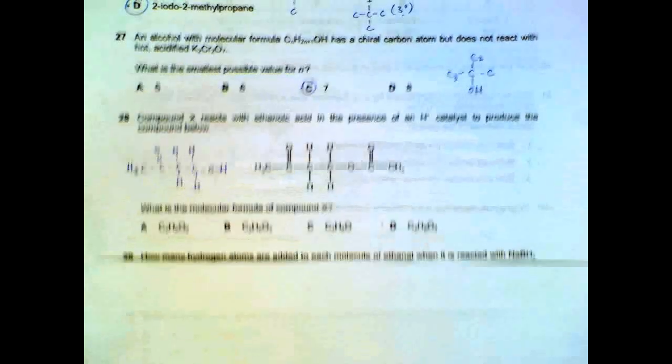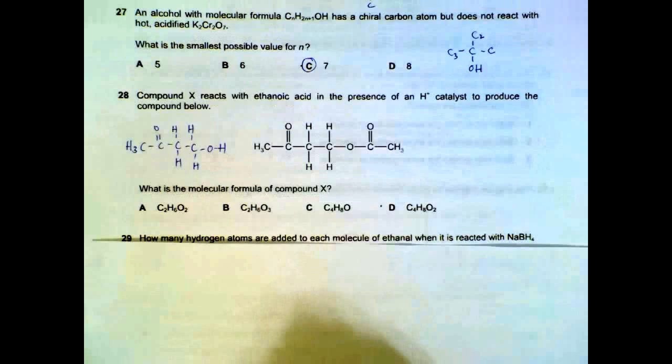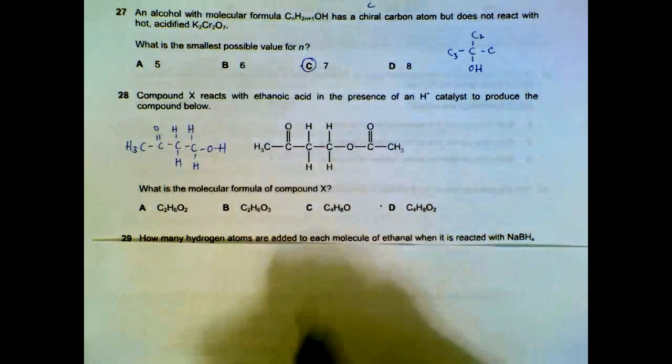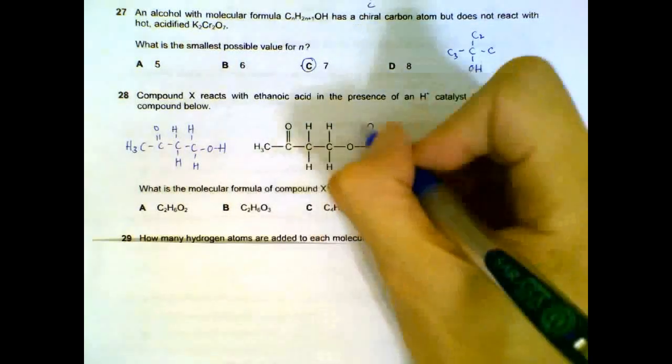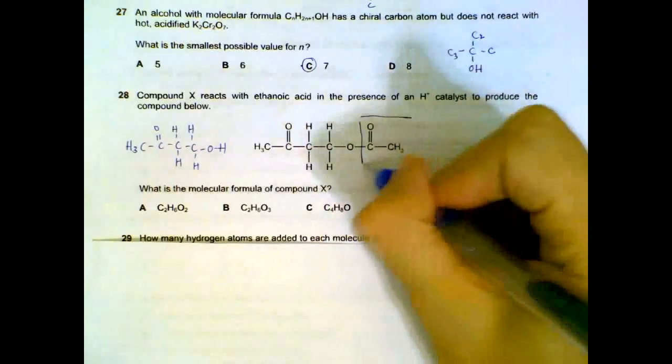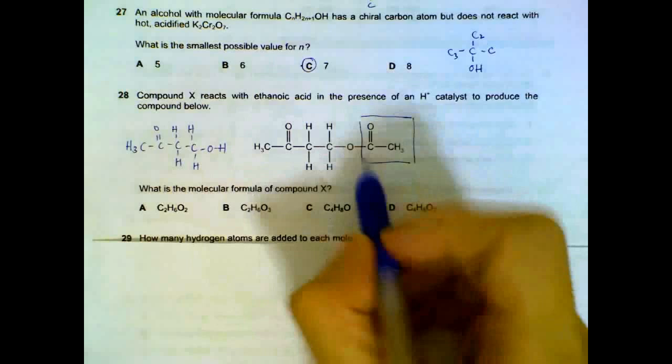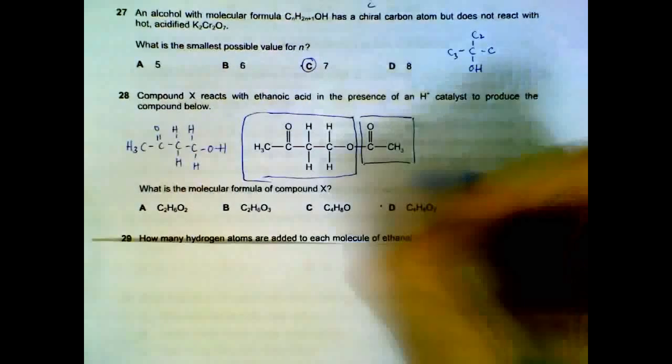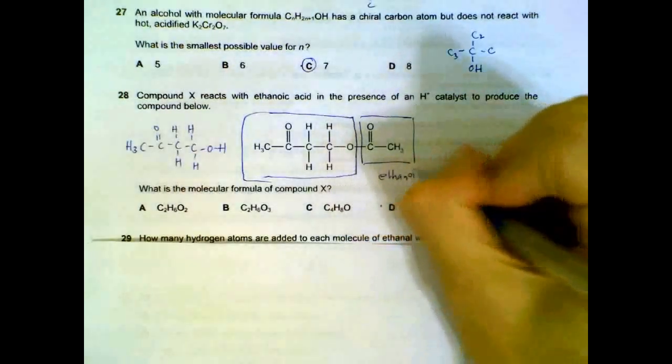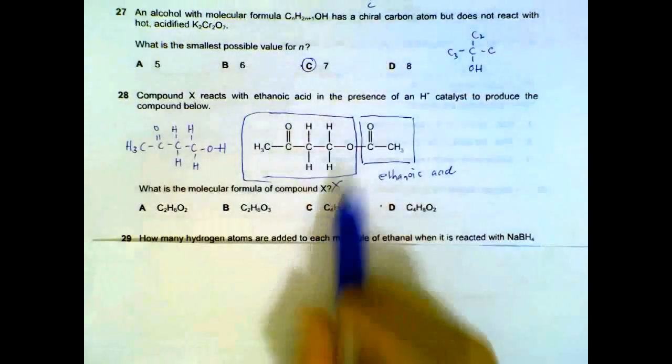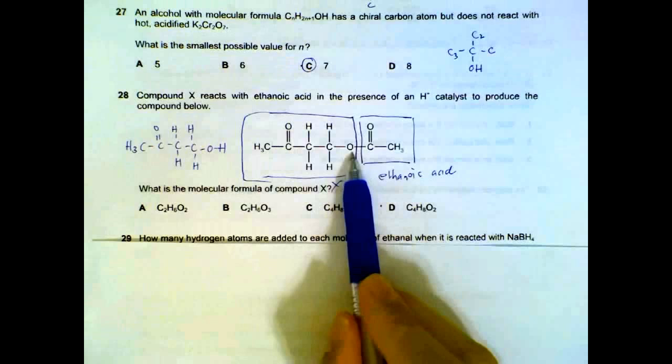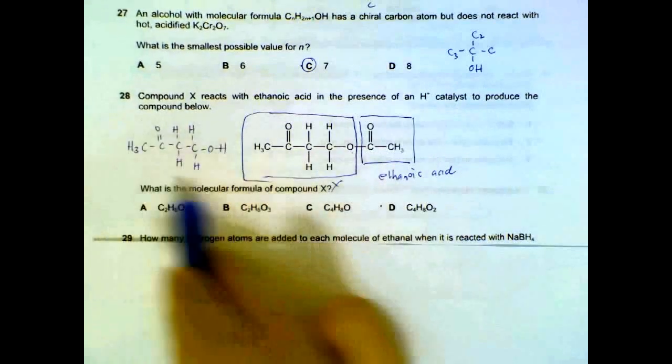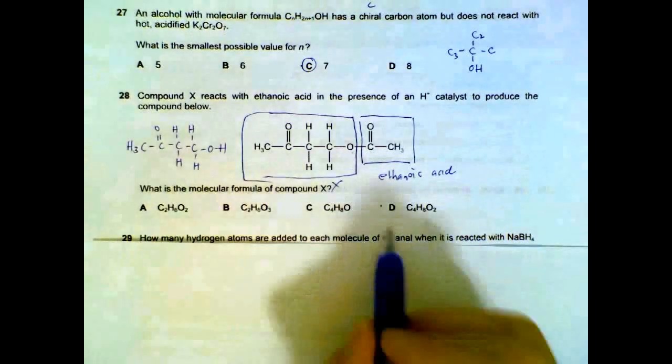Question 28. Compound X reacts with ethanoic acid to produce this compound below, so what is the original formula of X? Ethanoic acid will be responsible for this part. It has undergone esterification with your compound X, which is for this part. So this is ethanoic acid, this is X. And if we complete the structure of X, it must have the alcohol group then, it will look like this. So the formula will be C4H8O2.